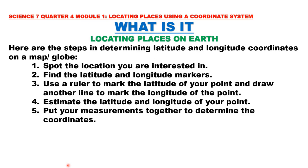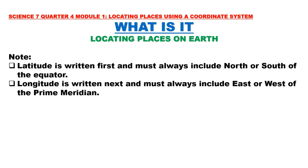Here are the steps in determining latitude and longitude coordinates on a map or globe: 1. Spot the location you are interested in. 2. Find the latitude and longitude markers. 3. Use a ruler to mark the latitude of your point and draw another line to mark the longitude of the point. 4. Estimate the latitude and longitude of your point. 5. Put your measurements together to determine the coordinates. Note that latitude is written first and must always include north or south. Longitude is written next and must always include east or west.